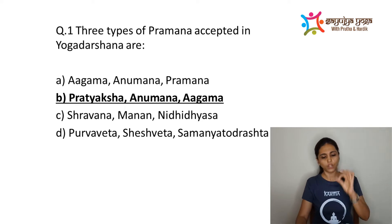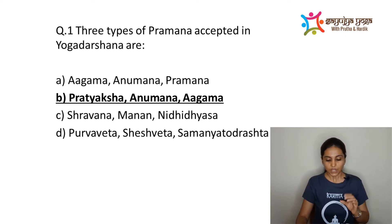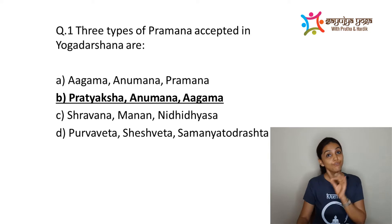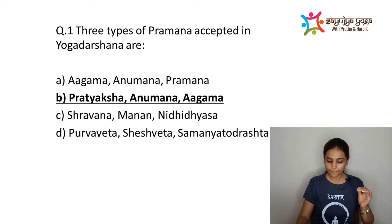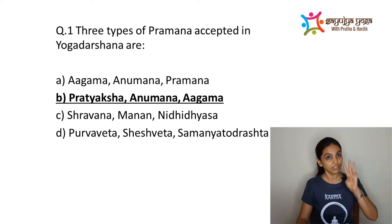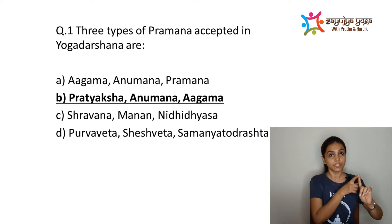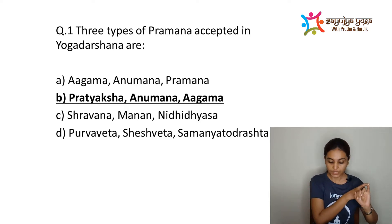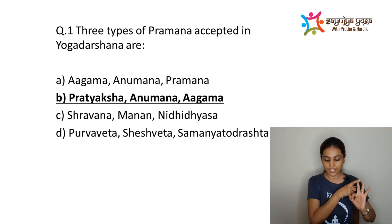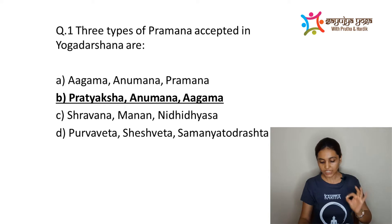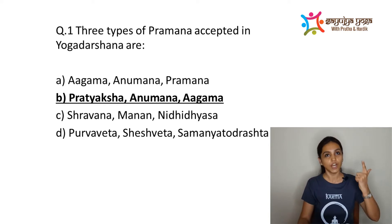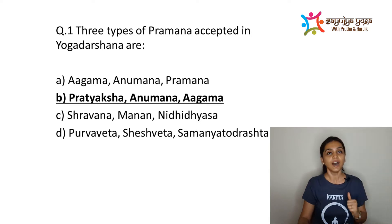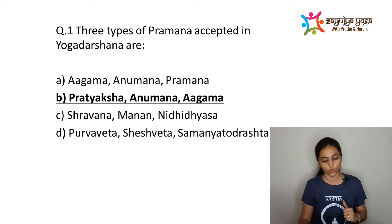What is Pramana? A Vrtti which gives valid knowledge is known as Pramana Vrtti. There are three types of Pramana: Pratyaksha, which means direct perception; Anumana, which means inference; and Agama, which means authentic testimony. These are the three Pramanas accepted in Yoga Darshan.